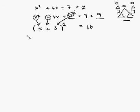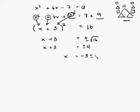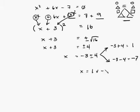Then when you take the square root, you're going to get x plus 3 equals positive or minus square root of 16, which is x plus 3 equals positive or negative 4. Then you subtract 3 from both sides and you get x equals negative 3 plus or minus 4. And that gives you two answers.